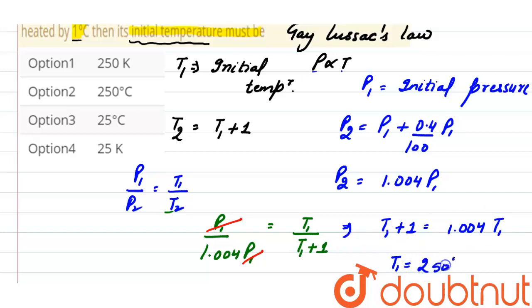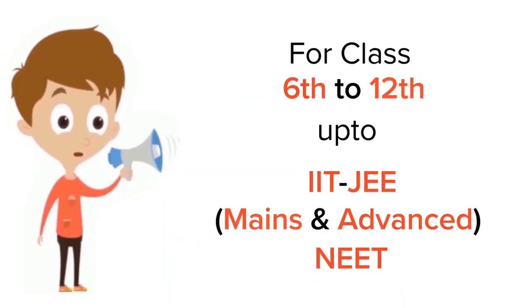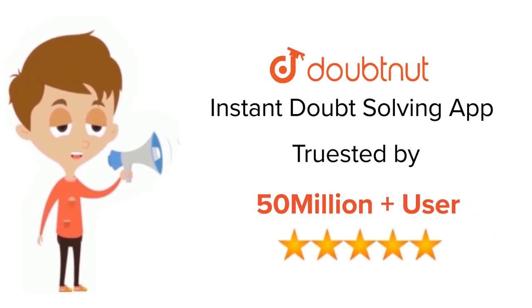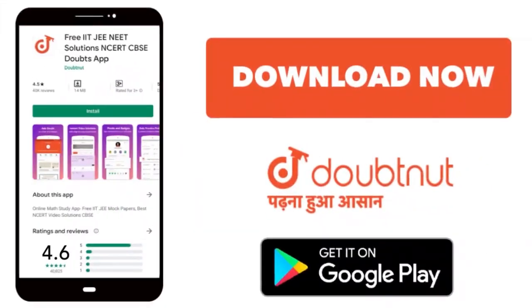is 250 degree Celsius, and the correct option is option 2. For class 6 to 12, IIT-JEE and NEET level, trusted by more than 5 crore students. Download Doubtnut app today.